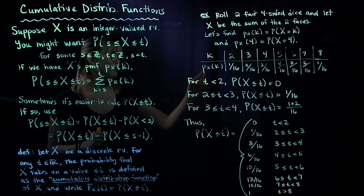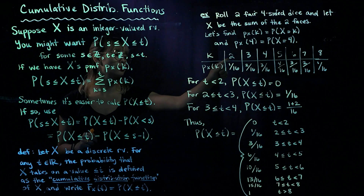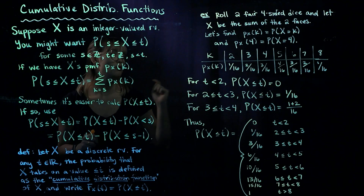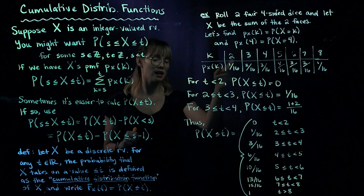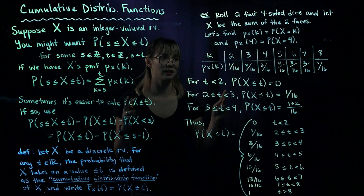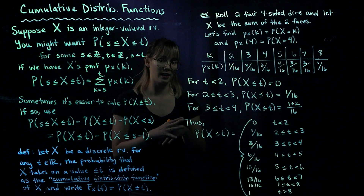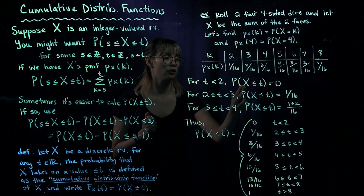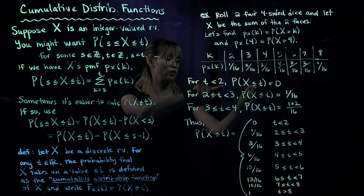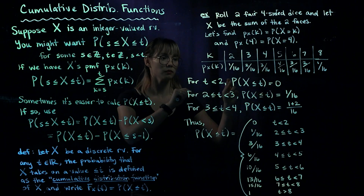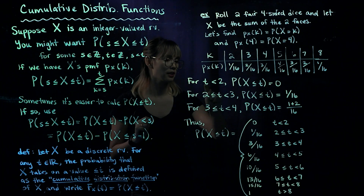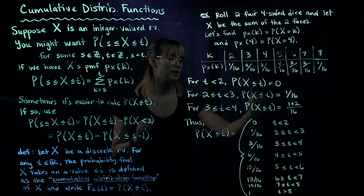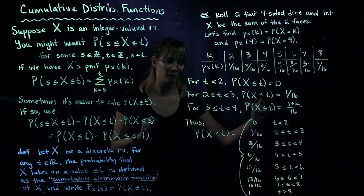For values of t that are strictly less than 2, the probability that x is less than or equal to t is going to be 0, because we cannot get a sum of two dice to be strictly less than 2. So the probability that the sum is strictly less than 2 is definitely 0. The first thing you'll often write down is some value of t and say that the CDF for that value is equal to 0.